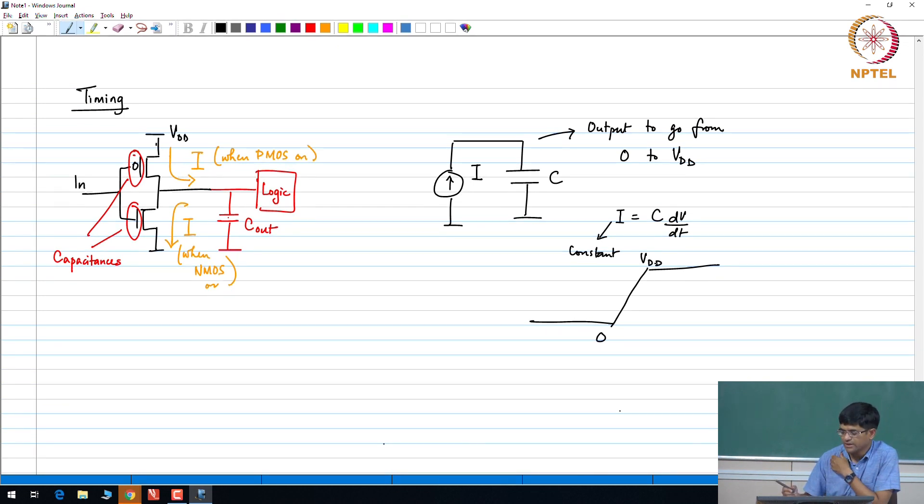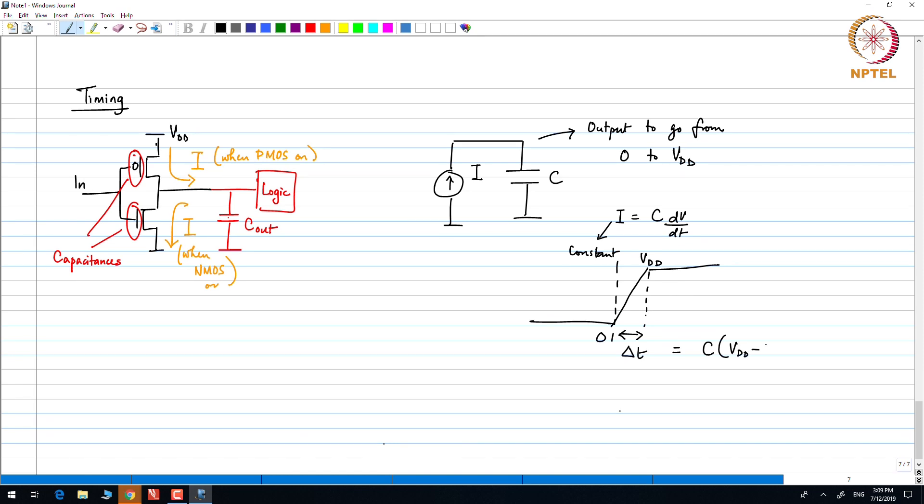Of course, if I go purely by the equation it would not stop at Vdd, but we know that the practical situation is that once it reaches Vdd the current cuts off, no further current flows and it stops over there. What this in turn means is that it takes a finite amount of time for the voltage at the output to go from 0 to Vdd. How much is that time? It would be the total charge that needs to accumulate on the capacitance divided by the current that is going to flow through it. So, C into Vdd divided by I is an approximation of how much time it is going to take for the output to charge up.